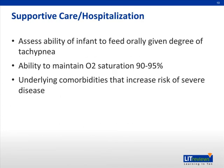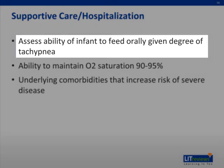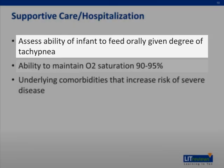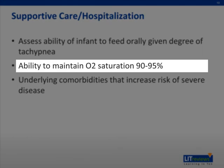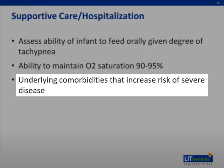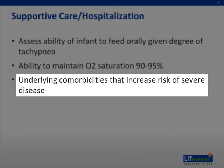Supportive care may require hospitalization. Some factors to consider are the ability of the infant to feed orally given the degree of tachypnea — generally we use a rule of greater than 60 breaths per minute for respiratory rate to switch over to IV fluids instead of oral fluid intake. Also, the ability of the infant to maintain O2 saturations greater than 90% is a factor in considering whether or not to hospitalize a patient, as well as underlying comorbidities that increase the risk of severe disease.